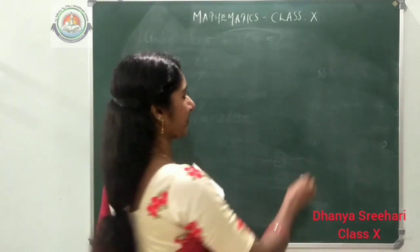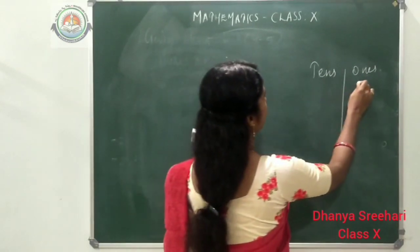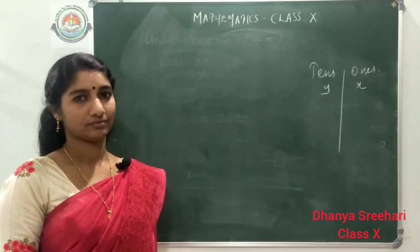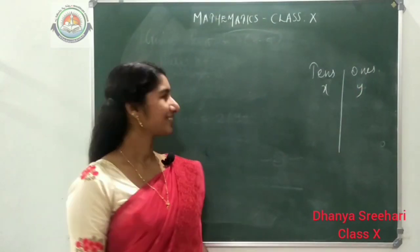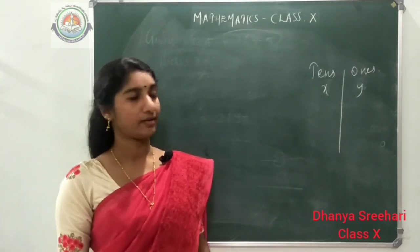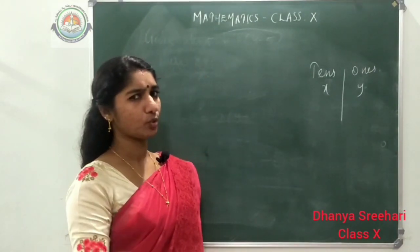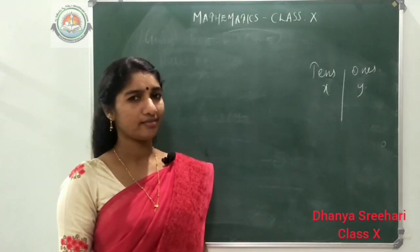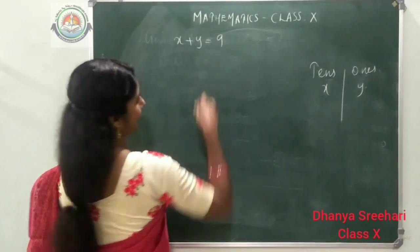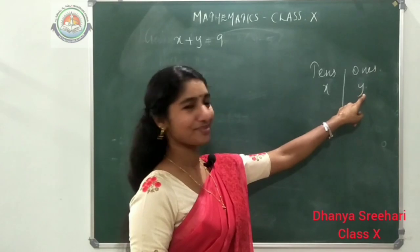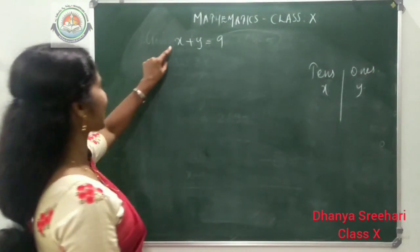We have a two-digit number with a tens place and a units place. Let x be the tens digit and y be the units digit. The number itself is written as 10x plus y. It is given that the sum of the digits equals 9, so the first equation is: x plus y equals 9.